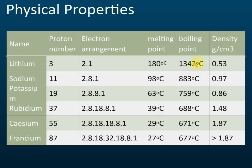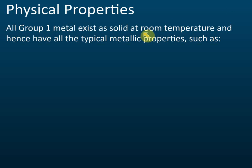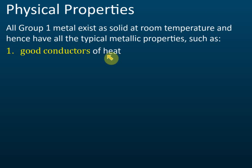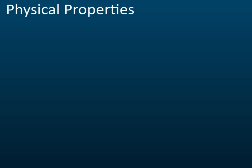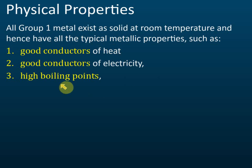From the physical properties table, all group one metals have one valence electron. Melting point, boiling point, and density all increase down the group. They exist as solids at room temperature, except cesium which can be liquid at room temperature. As metals, they have typical metallic properties: good conductors of heat and electricity, and high boiling point.